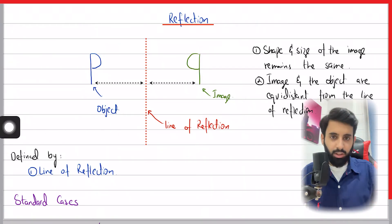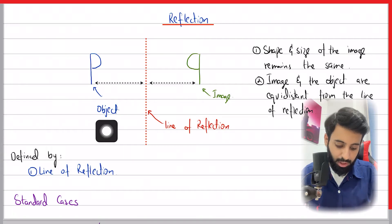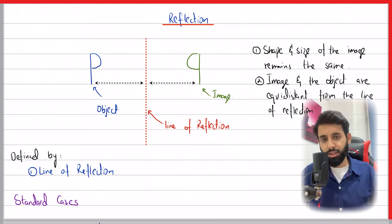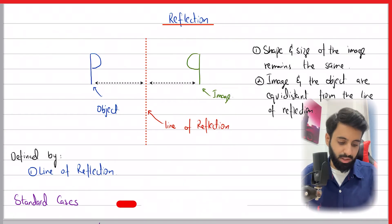One thing that should be very clear regarding the terminologies is that whatever is in its original form is the object, and whatever you get after you've applied the transformation, be it reflection, rotation, enlargement, or translation, is referred to as image.